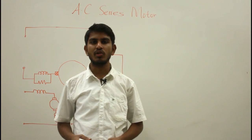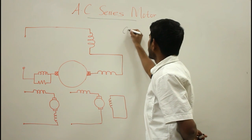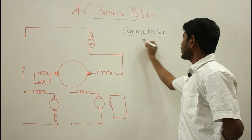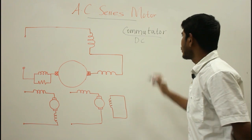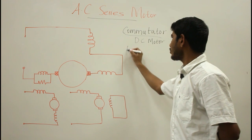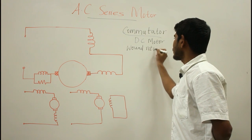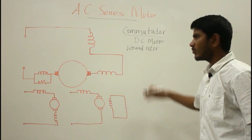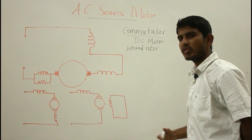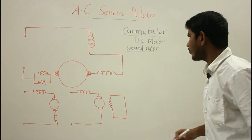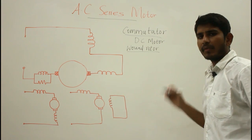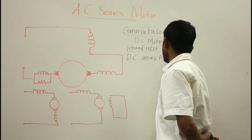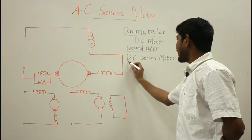In this video, let us discuss the AC series motor. The AC series motor is a type of commutator motor. Commutator motors are AC motors having a rotor with brushes and commutation arrangements, just like the armature section of a DC motor. The AC series motor is also known as the modified version of the DC series motor because its construction is exactly alike the DC series motor, except for some basic modifications.